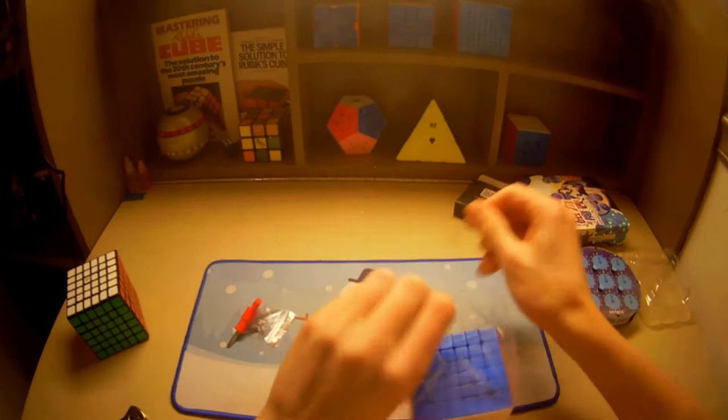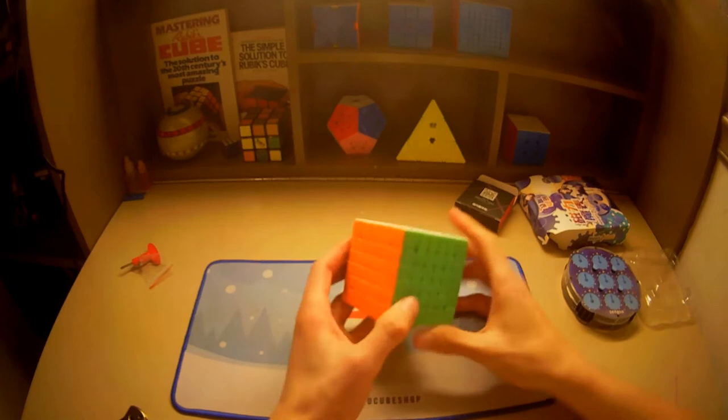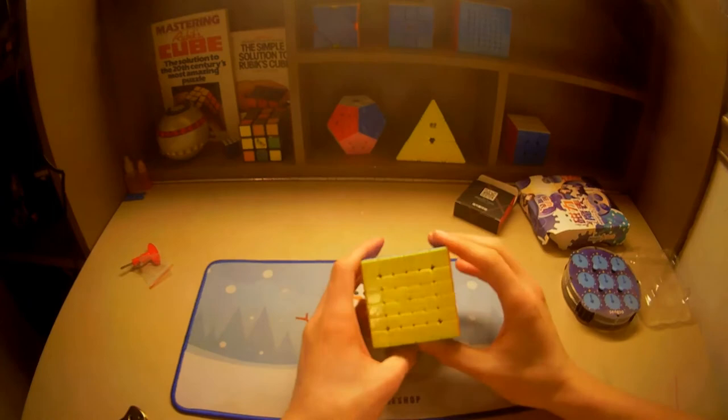Okay. So now this is the 6x6. Really nice stickerless shades. I prefer stickerless since the stickers don't peel off. So yeah, let's get into the turning.